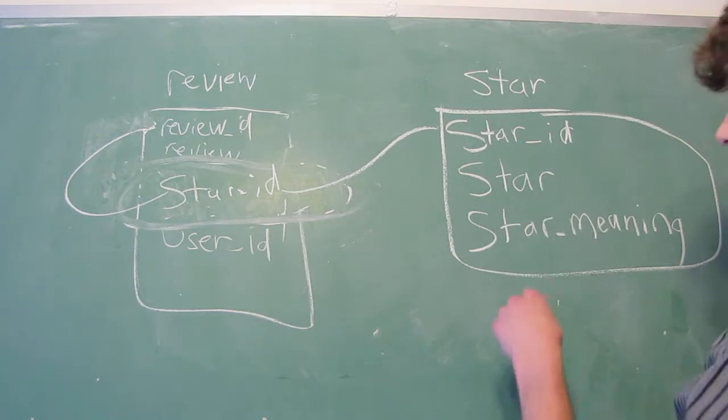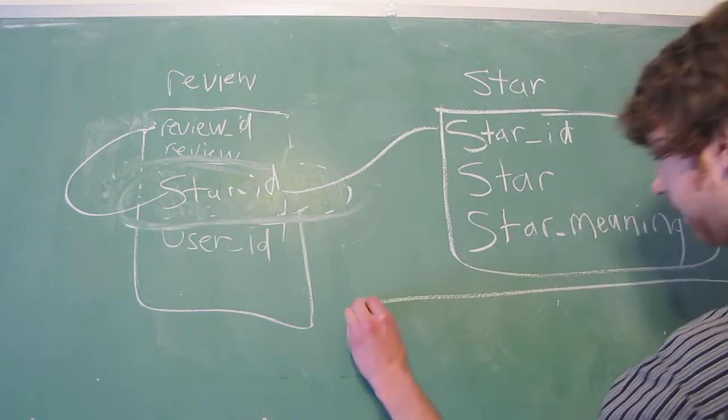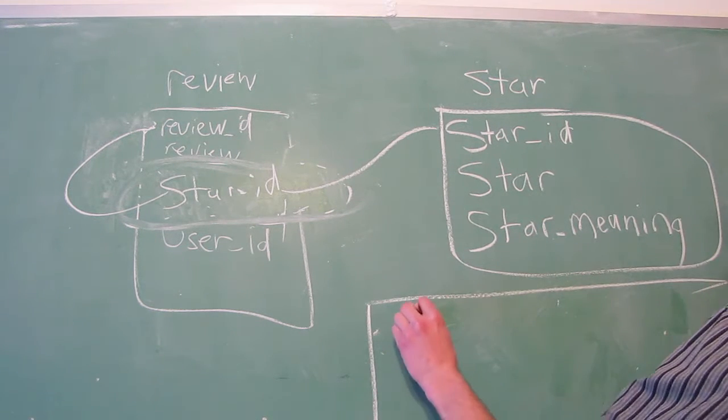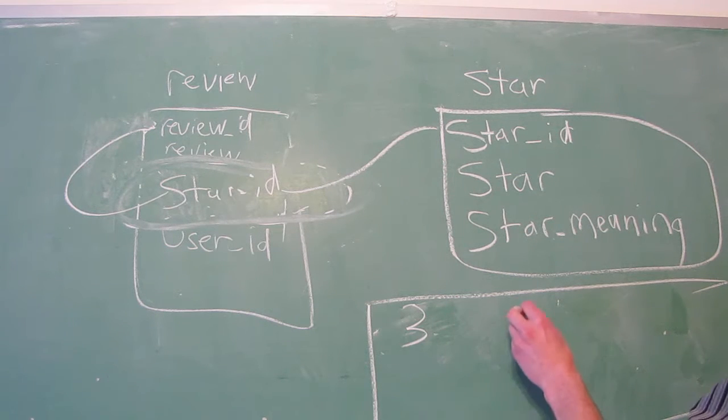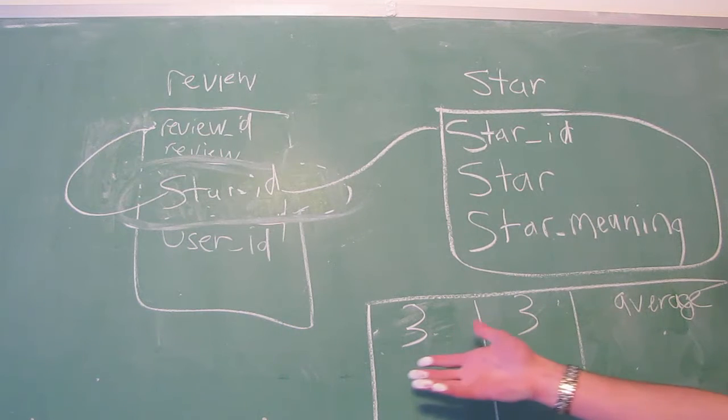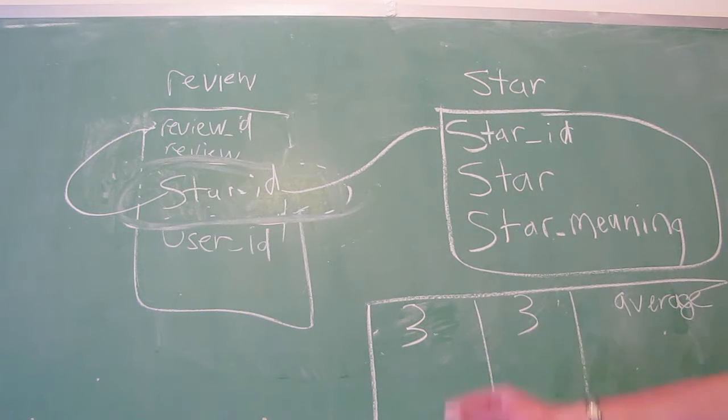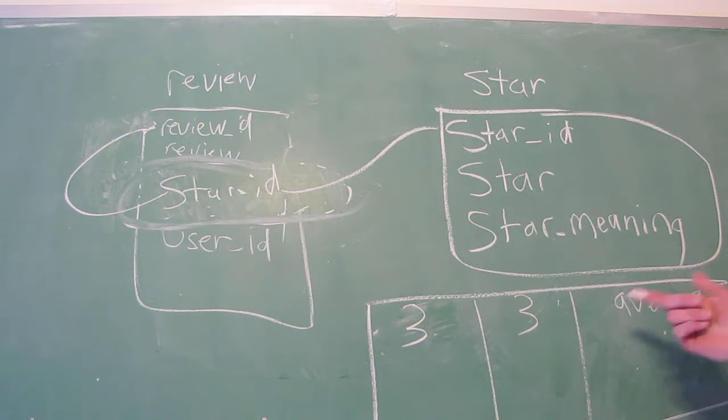Now over here, we could have, if we drew out this table, we would have, you know, we could have a star ID of three, and that star could be a three-star rating, and it could mean average. Now, we're likely to only have five individual rows in this table, so it's kind of like a reference table.